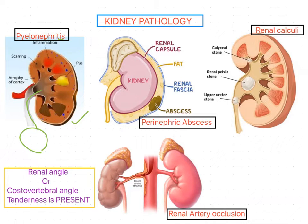Pyelonephritis causes accumulation of pus inside the renal parenchyma. If you see the shape of the kidney, it is also changed — normally it is bean-shaped, but here we can't find such a shape because something has happened to the structure of this kidney. This accumulation of pus inside the renal parenchyma leads to pain, which is elicited in this test.